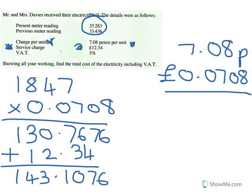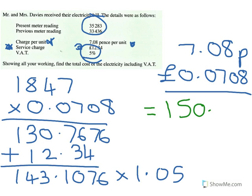Now, the last part of these questions will always be to add a percentage — VAT. On fuel it's 5%. So we've got to add 5%. Let's use a multiplier to do it quickly and do it in one step: multiply by 1.05. That will add 5% to the original amount. I get 150.26298.